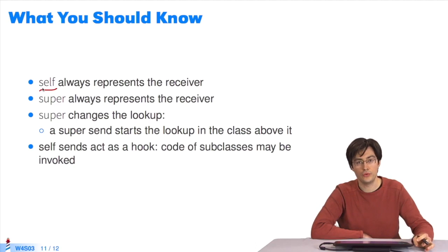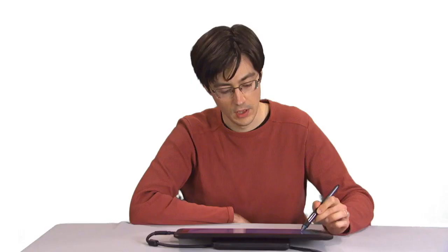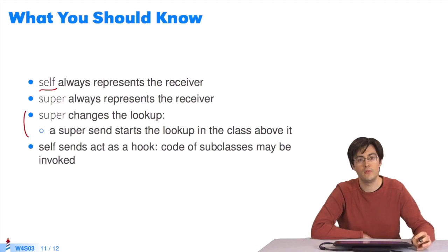It's just that this definition is wrong. Here's what to remember. Self always represents the receiver. So does super. It's the same in Java, with this and super. However, super changes the lookup. It will start looking for a match in the super class of the class containing the method that contains the keyword super. Self sends are dynamic. The developer can use them to extend the behavior of an existing class by creating a subclass that redefines the method.